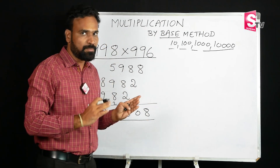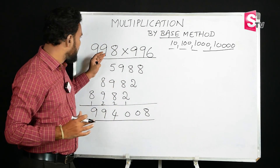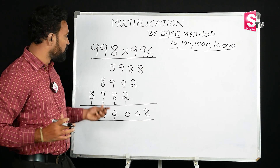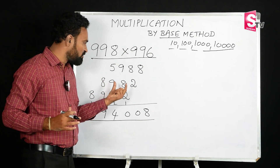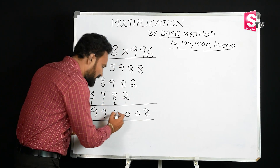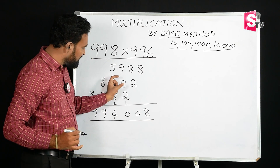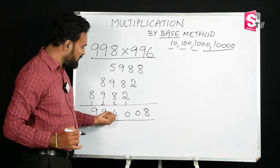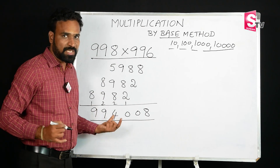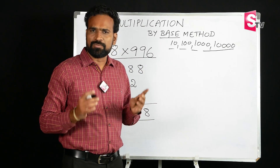We use this example: 998 times 996. Using the school method takes almost one minute. But if we use Vedic Mathematics — the base method — we can get the answer using only 3 to 4 seconds.